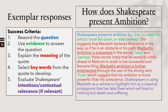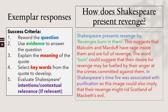Another example: 'How does Shakespeare present revenge?' Shakespeare presents revenge by: 'Revenges burn in them.' This suggests Malcolm and Macduff have rage inside them and are full of revenge. The word 'burn' could suggest their desire for revenge is fuelled by their anger at the crimes committed against them. In Shakespeare's time, fire was associated with purification, so this image could also imply that their revenge might rid Scotland of Macbeth's evil. Context is woven into the analysis rather than added at the end.